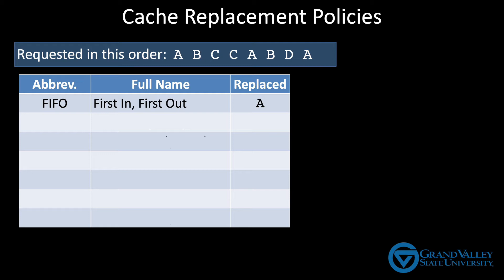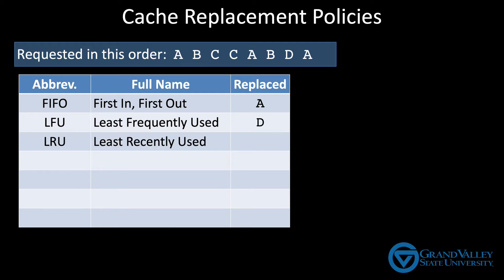Perhaps the most common suggestion is to kick out whichever variable has been used the least, which in this case would be D. A slight variation on that is to kick out the one that's gone the longest without being used — this is called least recently used, or LRU. In this case, that would be C. If you start from the right, you have to go the farthest to the left before you come to your first access of C.